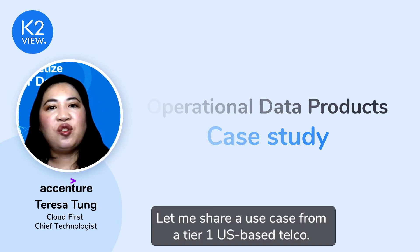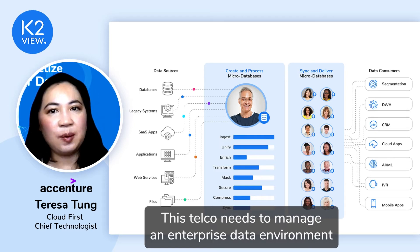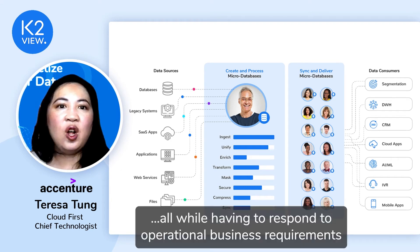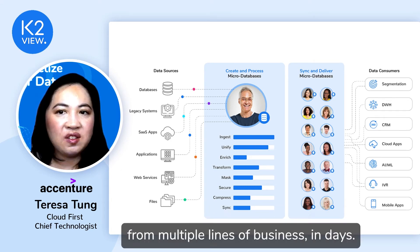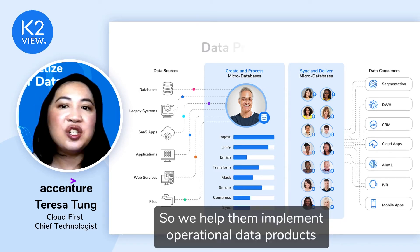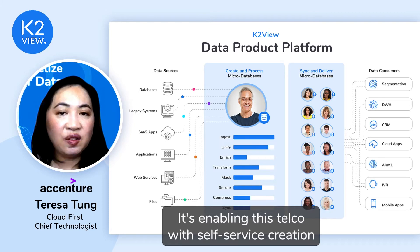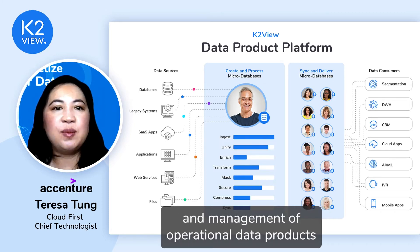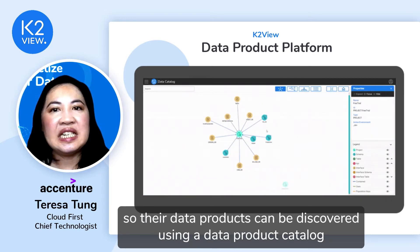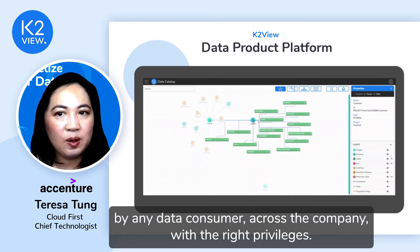Let me share a use case from a tier-one US-based telco. This telco needs to manage an enterprise data environment that is multi-system, multi-technology, and highly siloed, while responding to operational business requirements from multiple lines of business in days. We helped them implement operational data products using the K2View data product platform, enabling self-service creation and management of operational data products, discoverable via a data product catalog and consumable by any authorized data consumer across the company.